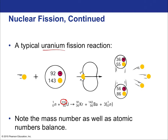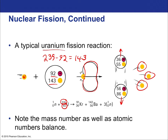Uranium-235 has 235 nucleons: 92 protons and 143 neutrons, since 235 minus 92 equals 143. If you bombard it with a neutron, that causes a critical deformation allowing the electrostatic force to tear the nucleus apart. This also releases stray neutrons and gives significant kinetic energy to both daughter nuclei — the term for the products of fission. Most of the energy is in the form of kinetic energy, though some fission reactions also create photons.